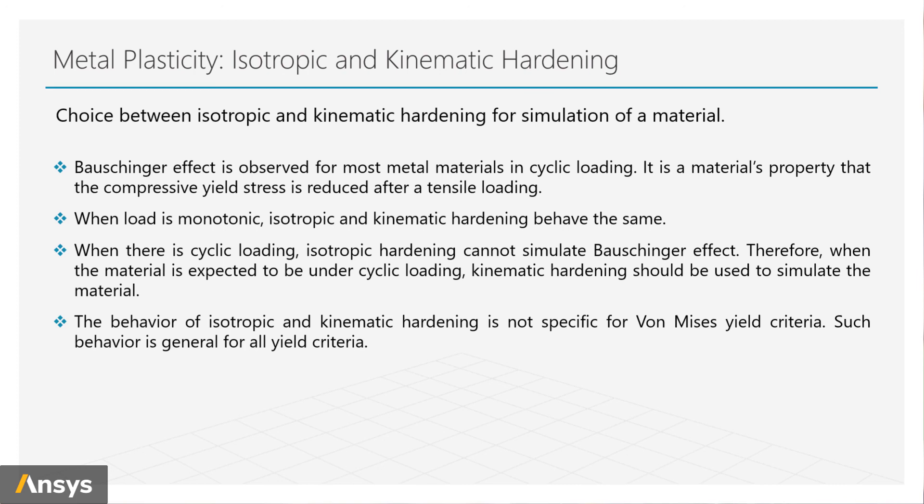In this lesson we used von Mises yield surface and bilinear hardening as an example in explaining hardening rules. In fact, the behavior of isotropic and kinematic hardening is general. It's not specific for certain type of yield surface or hardening models.